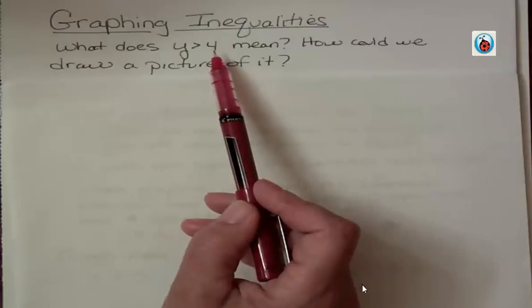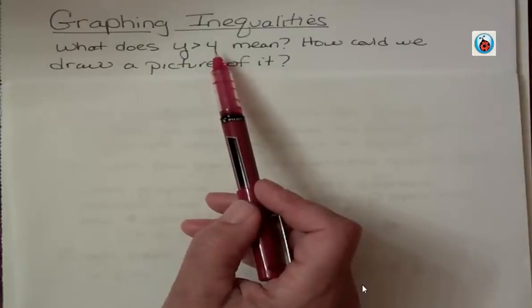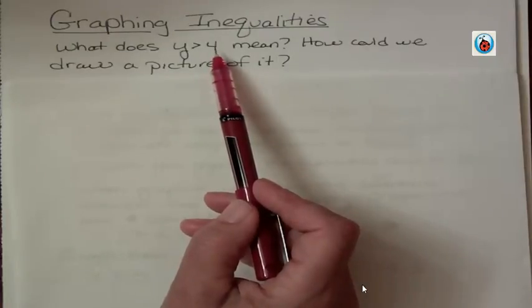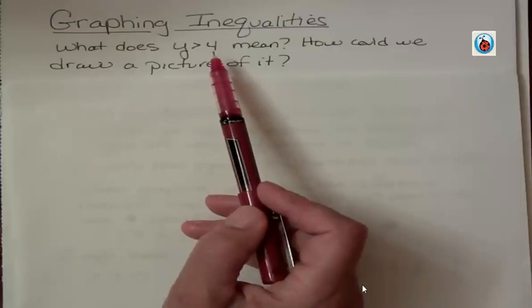In fact, it doesn't have to be an integer or a whole number. It could be a rational number like 4.2, 5.69, 7.5, anything that's greater than 4.